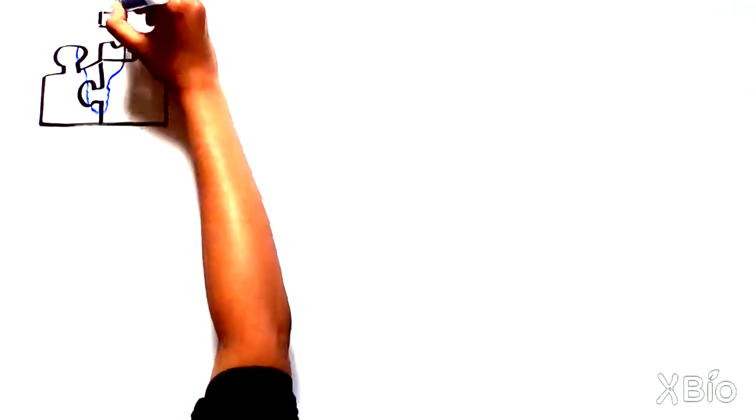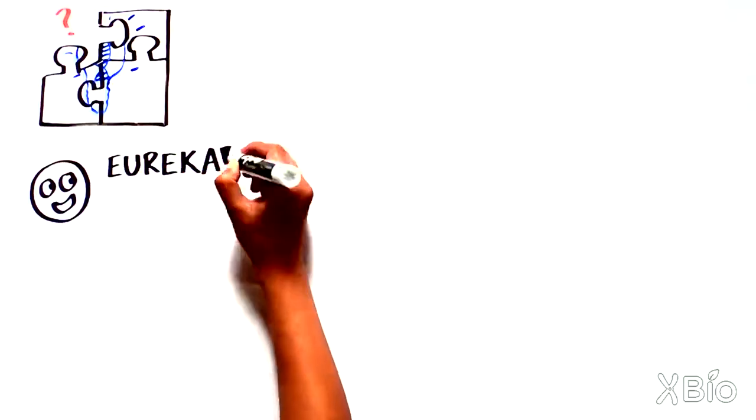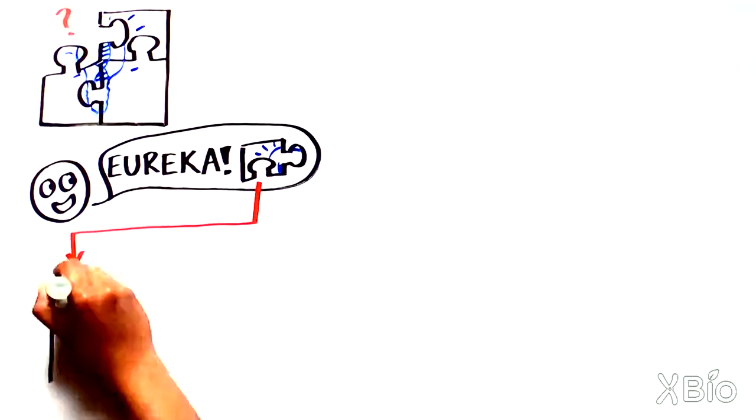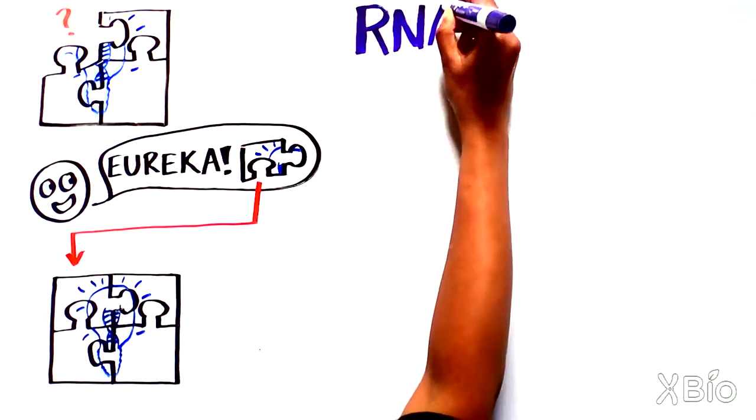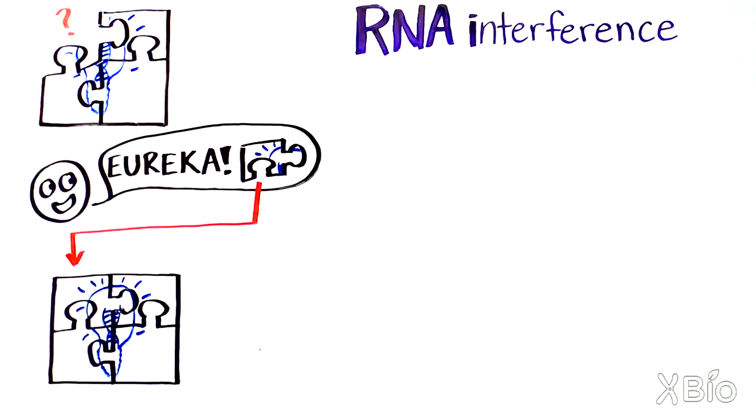Eureka moments are few and far between in the world of science. When they do happen, however, they can turn an entire field on its head. A compelling example is the discovery of RNA interference, or RNAi.